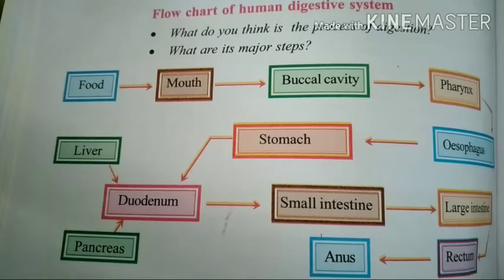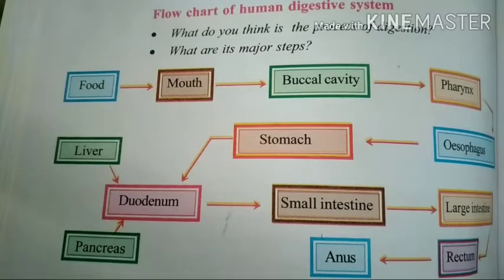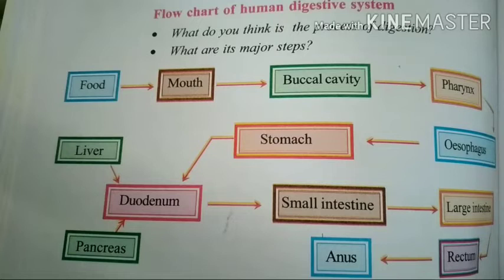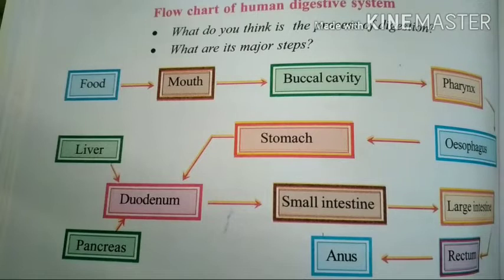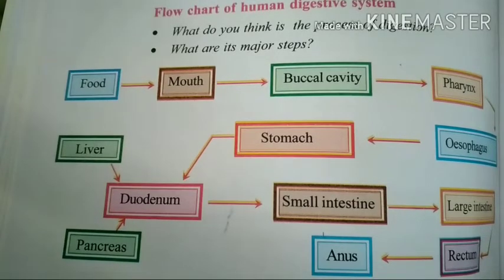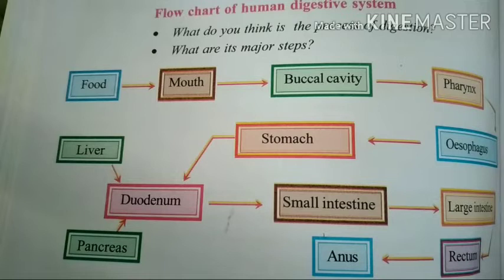From the mouth to the buccal cavity, food passes through the pharynx. The pharynx is one of the main parts at our buccal cavity. It contains epiglottis. At the pharynx, food goes into the food pipe and wind goes into the windpipe. The epiglottis acts as a trapdoor, maintaining that food goes into the food pipe and air goes into the windpipe.